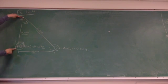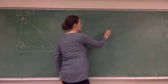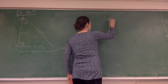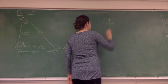Due to the presence of the positive charge, E field always points away from positive charges. So the presence of the positive charge will have a net E pointing up and away from the positive charge. So I'll draw that here as E plus.